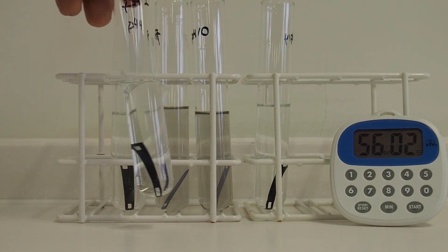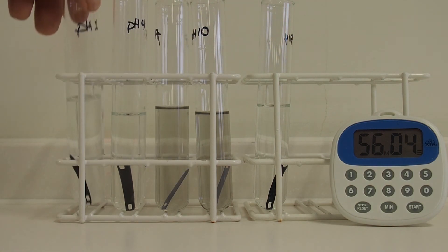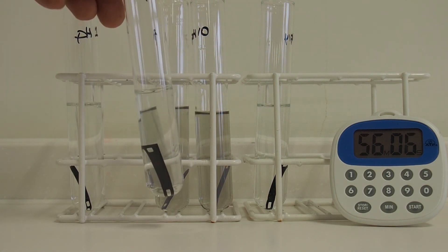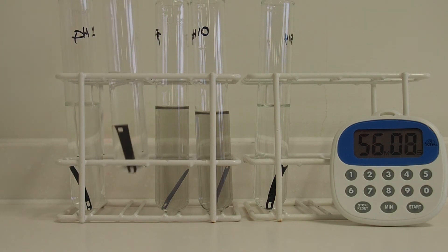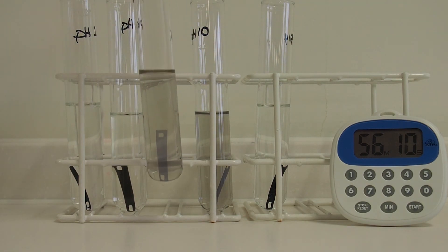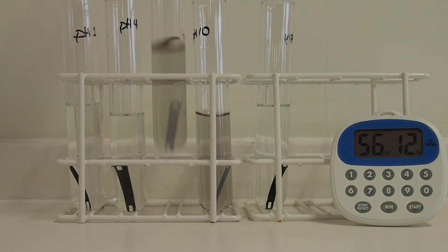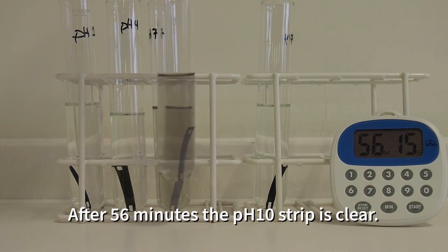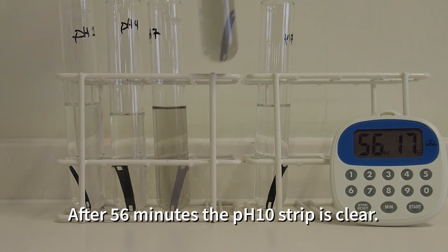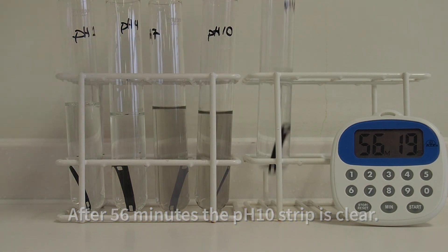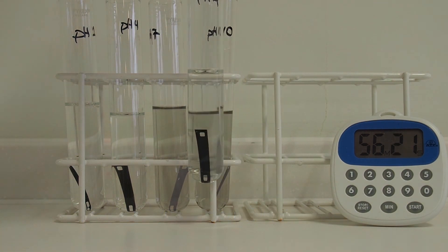After nearly an hour the pH 1 film is still completely unaffected and so is the pH 4 film. The pH 7 film looks just like it did after about 22 minutes. The pH 10 film is finally finished completely. And the pH 14 film is so far unaffected by the trypsin.